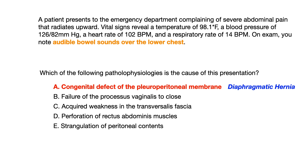The reason that this is the correct answer is because this question is alluding to a diaphragmatic hernia. When we look at the vignette, what you should have pulled out is the last sentence: on exam, you note audible bowel sounds over the lower chest. Even if you didn't know that phrasing indicated a hernia, when you look at the answer choices, the differential is clearly one of many different types of hernias. The question is: based on audible bowel sounds in the lower chest, can you pick out the diaphragmatic hernia from the other types?